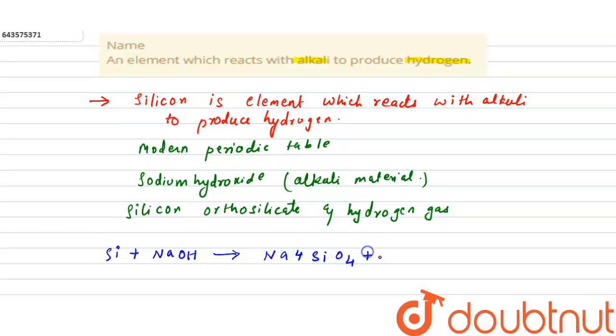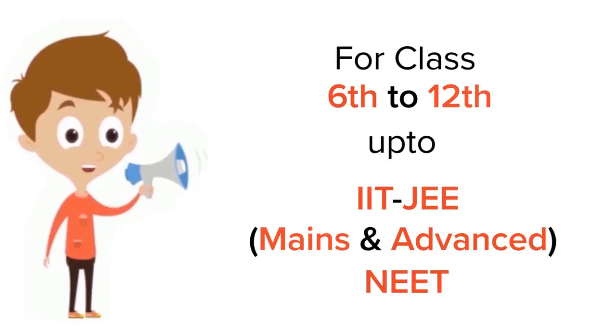The equation gives SiO4 plus H2. Okay, so our correct answer is silicon. For class 6 to 12, IIT, JEE, and NEET level,